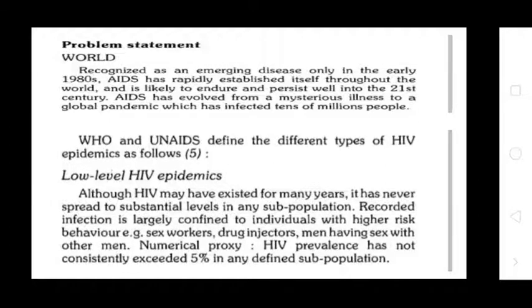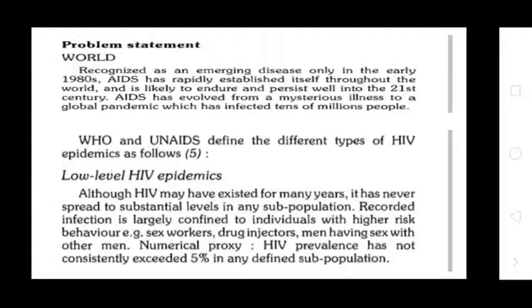WHO and UNAIDS define different types of HIV epidemics as follows. 1. Low-Level HIV Epidemics: Although HIV may have existed for many years, it has never spread to substantial levels. Infection is largely confined to individuals with higher-risk behavior — sex workers, drug injectors, men having sex with men — and HIV prevalence has not consistently exceeded 5% in any subpopulation.